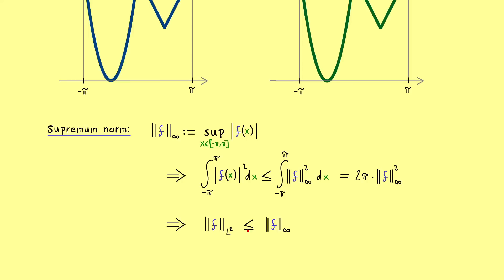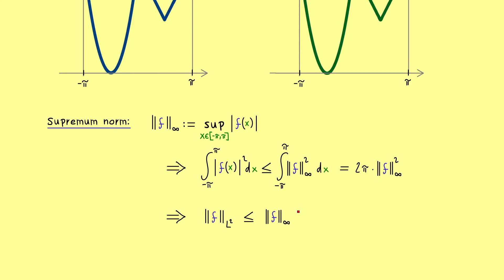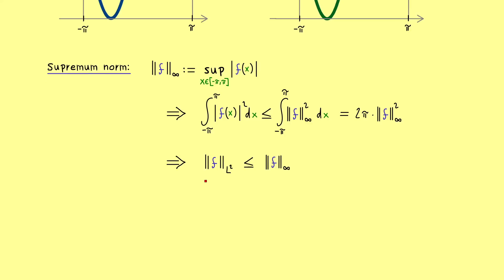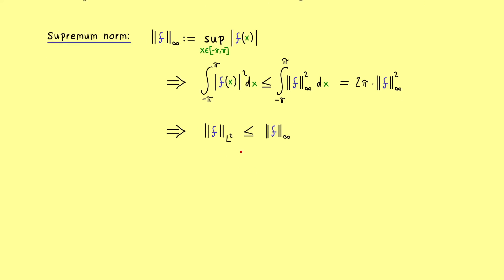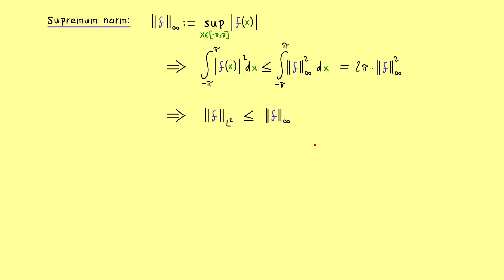Moreover we can also delete the squares so we have that the supremum norm is always bigger or equal than the L2 norm. In this formula you also immediately see that convergence with respect to the supremum norm is stronger than the convergence with respect to the L2 norm. Therefore we really have to put in some work to show that we have this uniform convergence. But first we have to state the theorem with all the details.